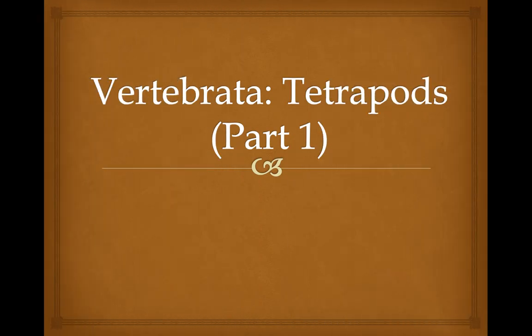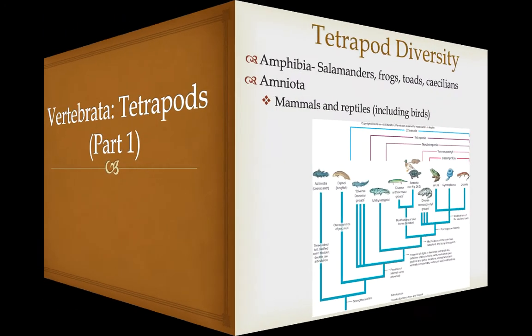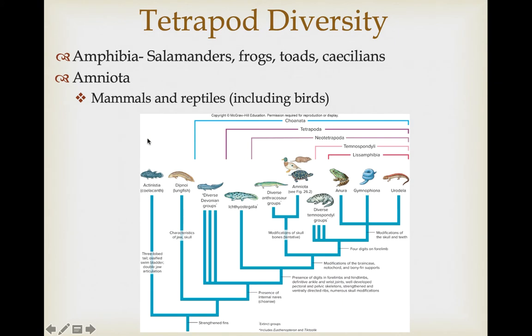In the last video, we introduced the vertebrata by discussing the earliest branches, which we generally refer to as the fishes. The last of those, the lobefin fish, actually include the tetrapods, and the tetrapods are going to be broken up into two lectures. We recently covered the lobefin fishes, and within the clade that would include the sarcopterygians, which are the lobefin fishes, would include the tetrapods. So we're going to be looking at the tetrapods starting today, and we're going to be looking at the amphibians, which are described here as the lissamphibia.